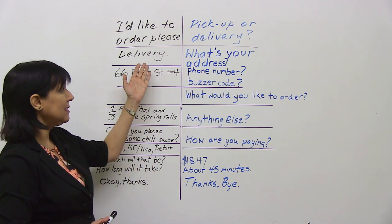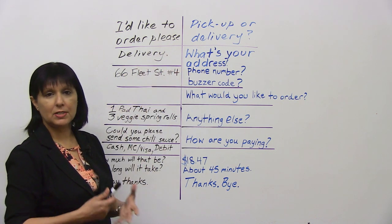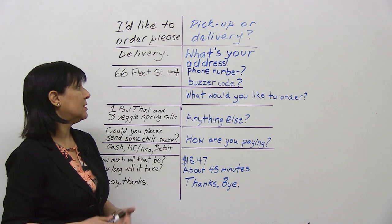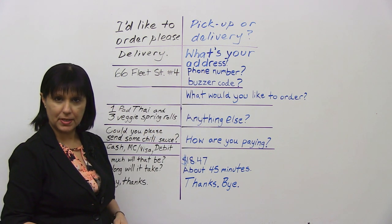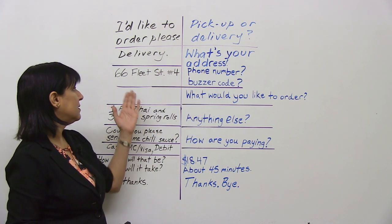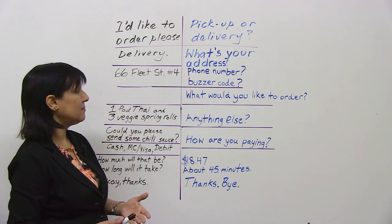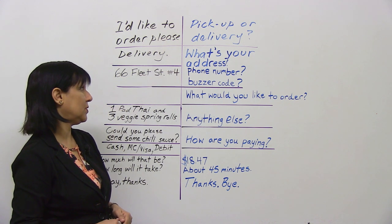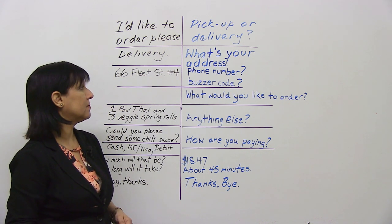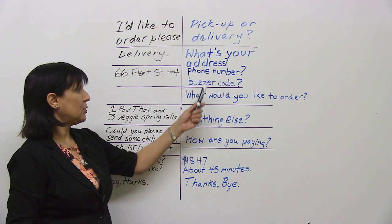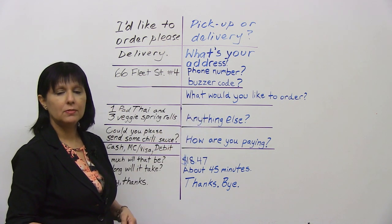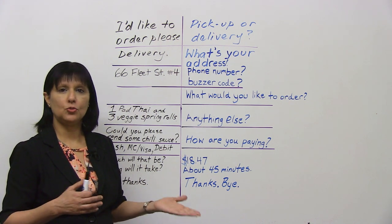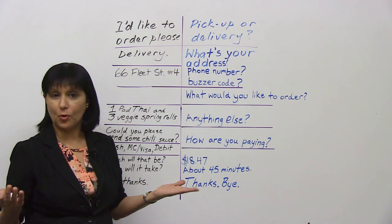So if you want it to be delivered, the person is going to ask you some more questions. For example: "What's your address?" So you say: "66 Fleet Street, apartment 4." Then: "What's your phone number?" You give your phone number: "647-2164."